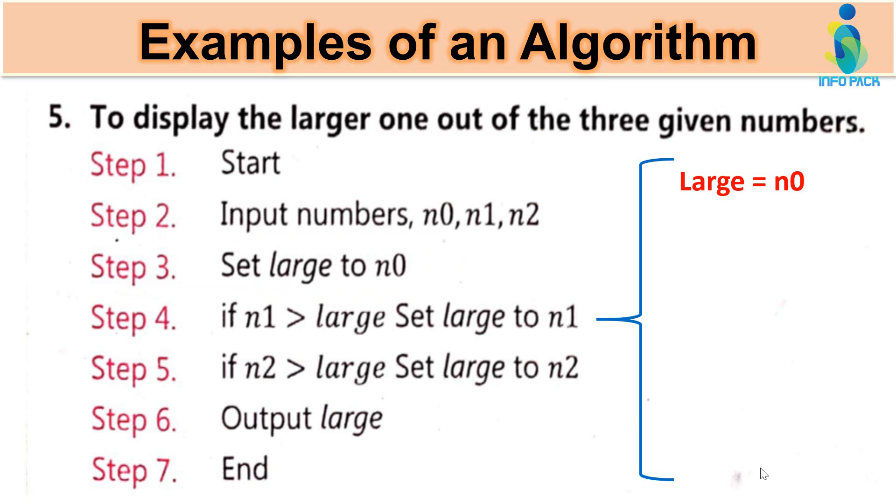Now step four is if n1 is greater than large. Ab large meh yehaan peh kya pada ho hai? N0 number 0. Ab n1 or n0 ki condition ko check kia jara hai. If n1 is greater than large then set large to n1. Kyunke hum nhe large meh woh value store kawa nai hai jho dounou numbers se bada ho ga. Agar n1 greater ho jata hai large se, toh n0 ko drop kar dhena hai or kis ko pika kari lena hai? N1 ko.